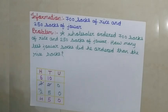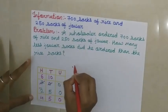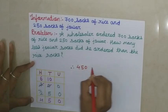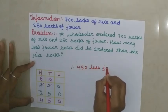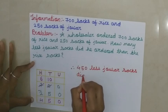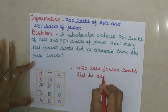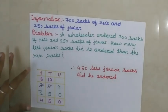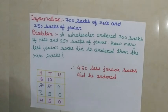So how will we write the final answer? Therefore, 450 less jawar sacks did he order. Okay children, so I hope you all understood how to solve and how to prepare word problems. Now you are very clear with the lesson. So you will watch the video again and again, and afterwards you will complete the lesson in the workbook. Okay, thank you, bye-bye.